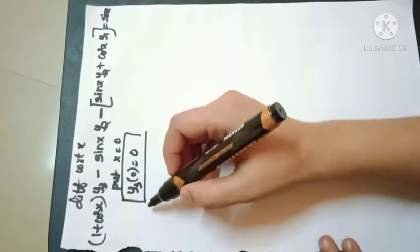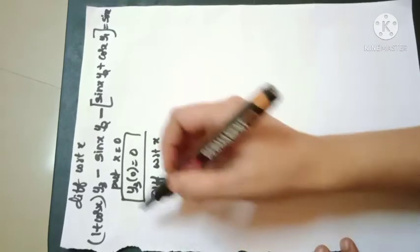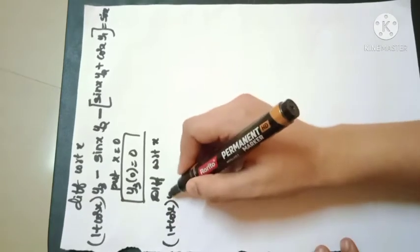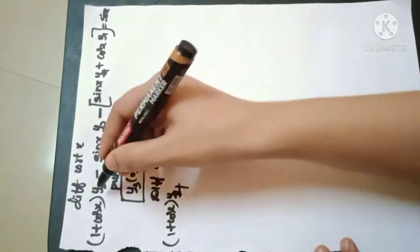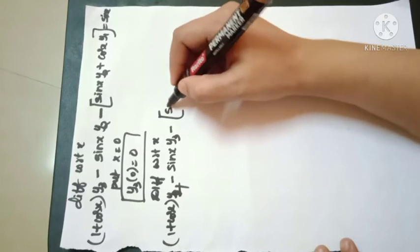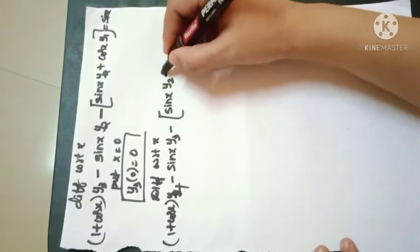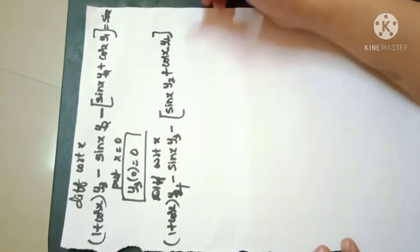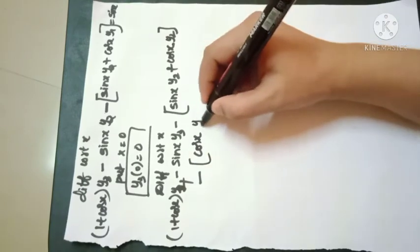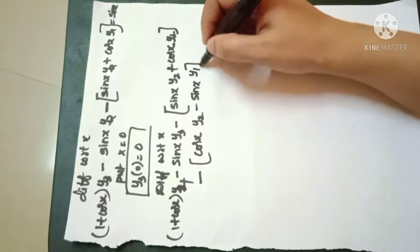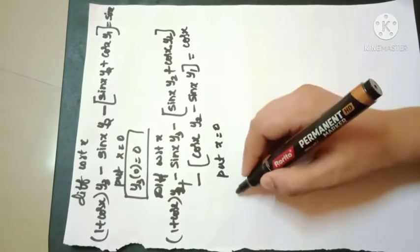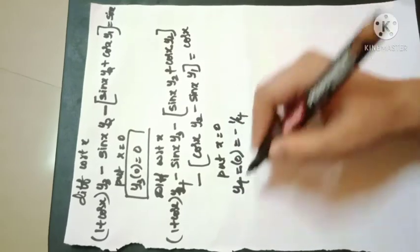Differentiating once more with respect to x to find y4: (1 + cos x)·y4 − sin x·y3 − [sin x·y2 + cos x·y2 − cos x·y2 − sin x·y1] = cos x. Putting x = 0 and substituting all known values, we finally get y4(0) = −1/4.